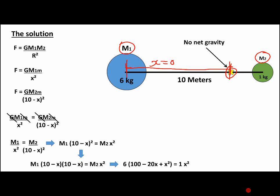We can now times that out and we get 600 minus 120X plus 6X squared equals 1X squared.